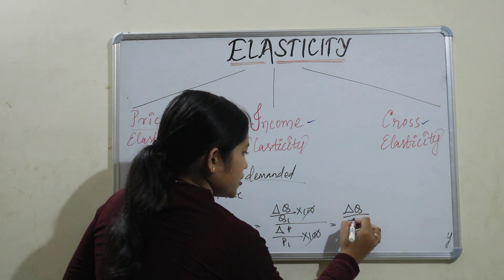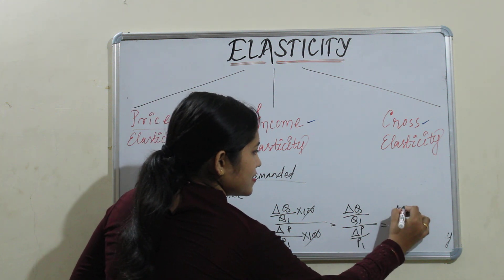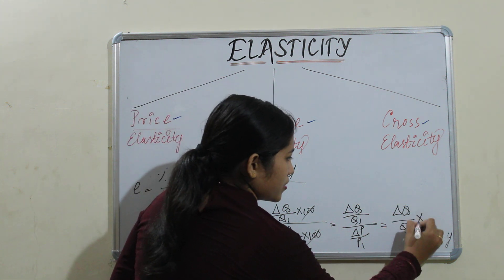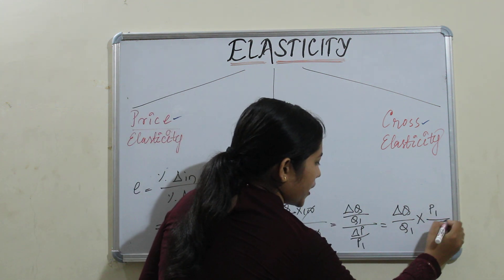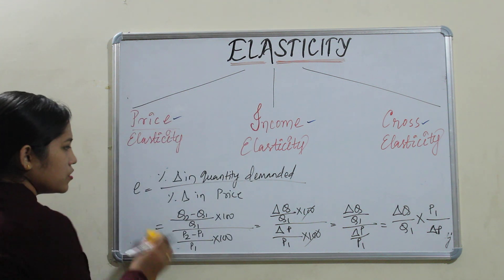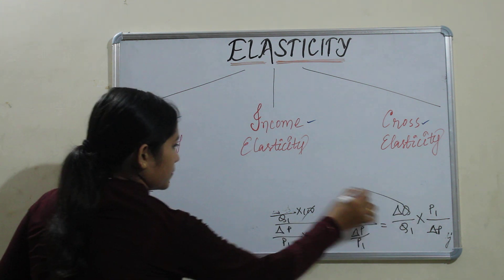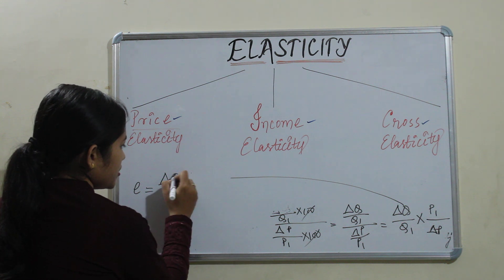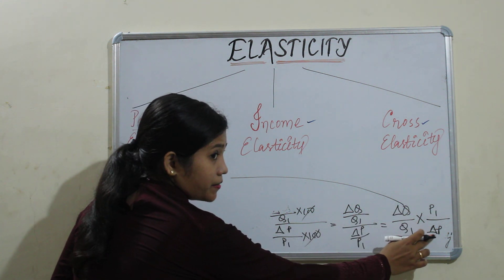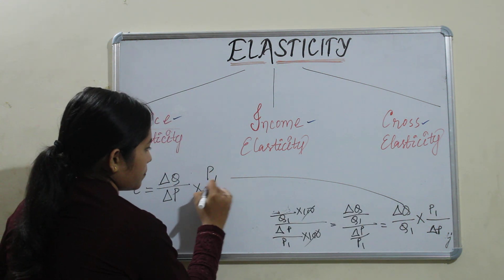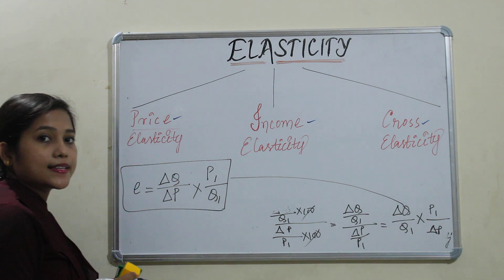What we get is: change in Q divided by Q1, divided by change in P divided by P1. We can write this as change in Q divided by Q1, then taking the denominator into numerator it becomes P1 divided by change in P. So elasticity equals change in quantity divided by change in price, multiplied by initial P1 divided by Q1. This is the formula for price elasticity.